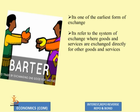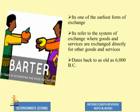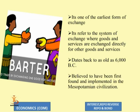Mind well, my dear students — it is not just about exchange of goods against goods or services against services. You can also exchange goods against services and services against goods. This system dates back to as old as 6000 BC. Think about how transactions took place without money. This system is believed to have been first found and implemented in the Mesopotamian civilization.